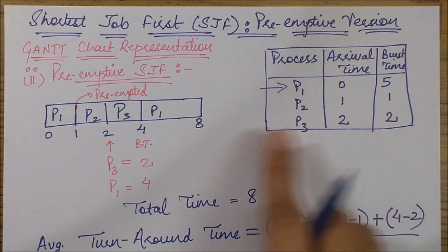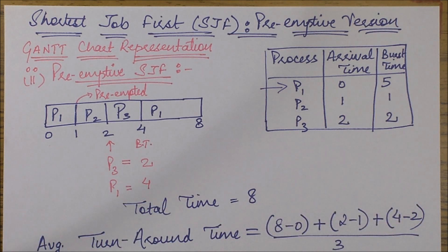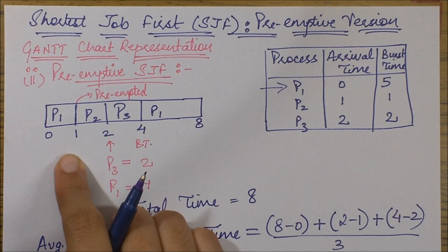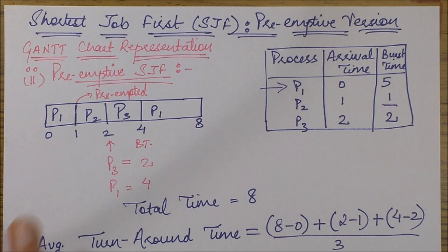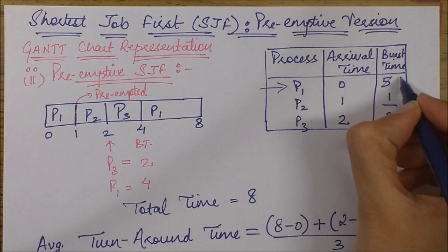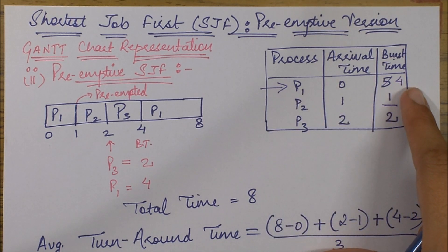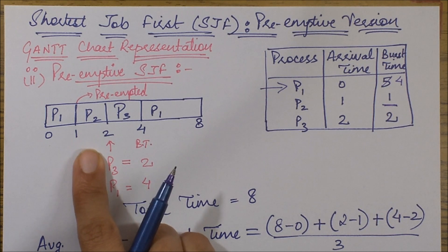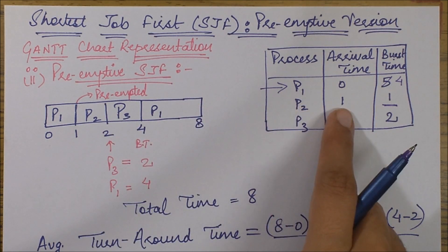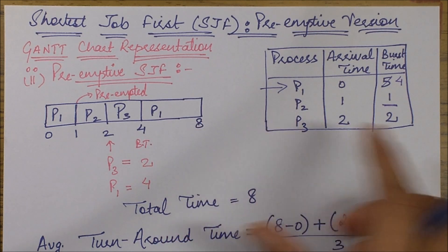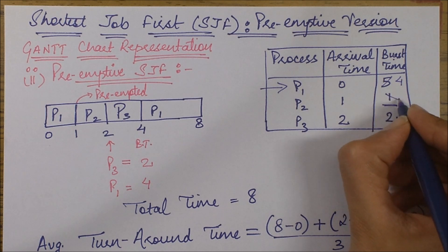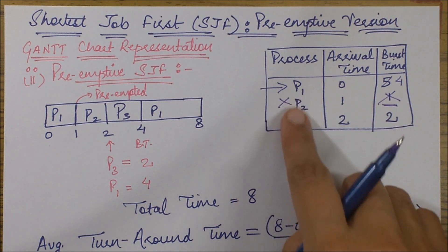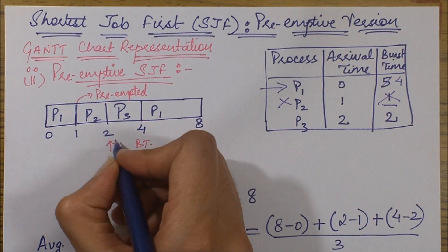We continue P1's execution until another process arrives. Since P2 arrives at time instant one, at time instant one we check whether we should preempt P1. P2 has a smaller burst time — P1 has already executed one unit so it has four time units left, while P2 has only one time unit to execute. So P2 should be executed next. We start P2's execution, and after one time instant P3 arrives, but P2 completes at time instant two. So P2 is done and out of the picture.